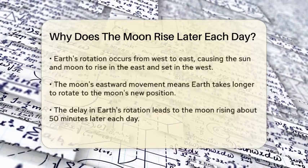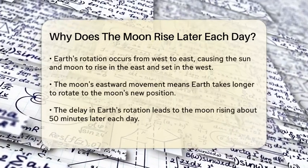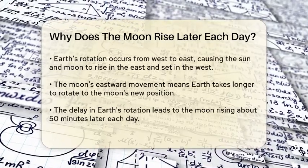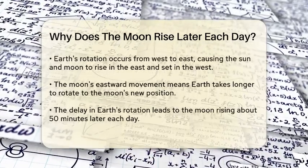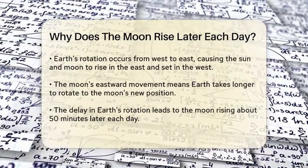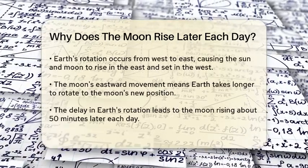Now, here's where Earth's rotation comes into play. The Earth spins from west to east, which is why the sun rises in the east and sets in the west. The same principle applies to the moon. It rises in the east and sets in the west.